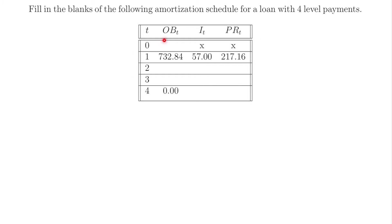Here we have an amortization schedule which shows us that for a certain time t, what our outstanding balance will be, what the interest is that accumulated since the last payment was made, and the principal that would be paid at time t. We were given a few values to start with, as well as the fact that after the fourth level payment our outstanding balance is zero. We don't need to find the interest accumulated at time equals zero because there is no interest at time equals zero, and there's also no principal paid or payment made at time equals zero.